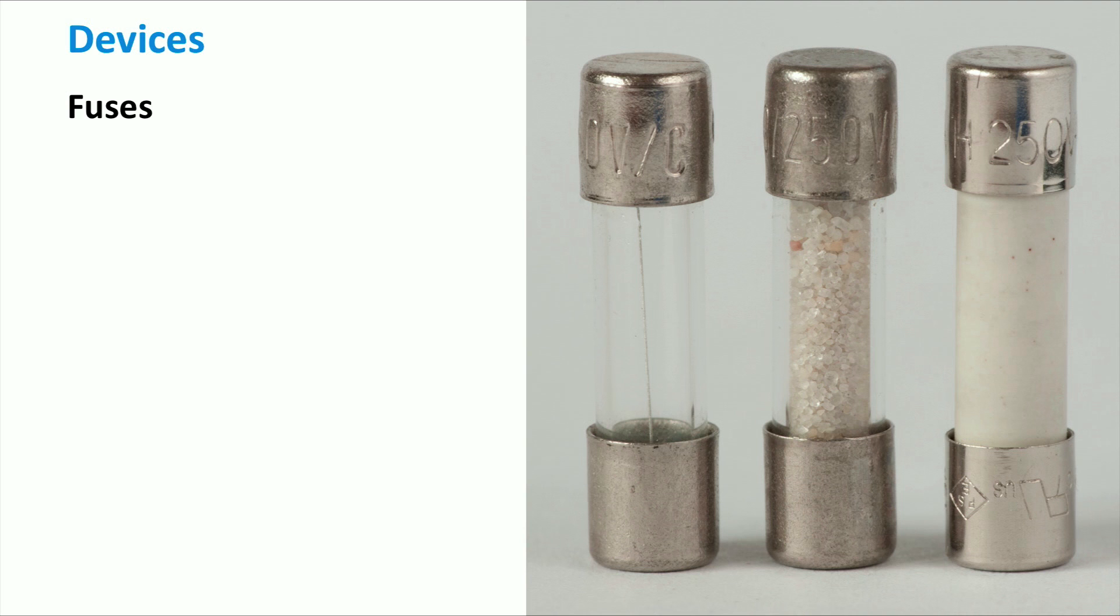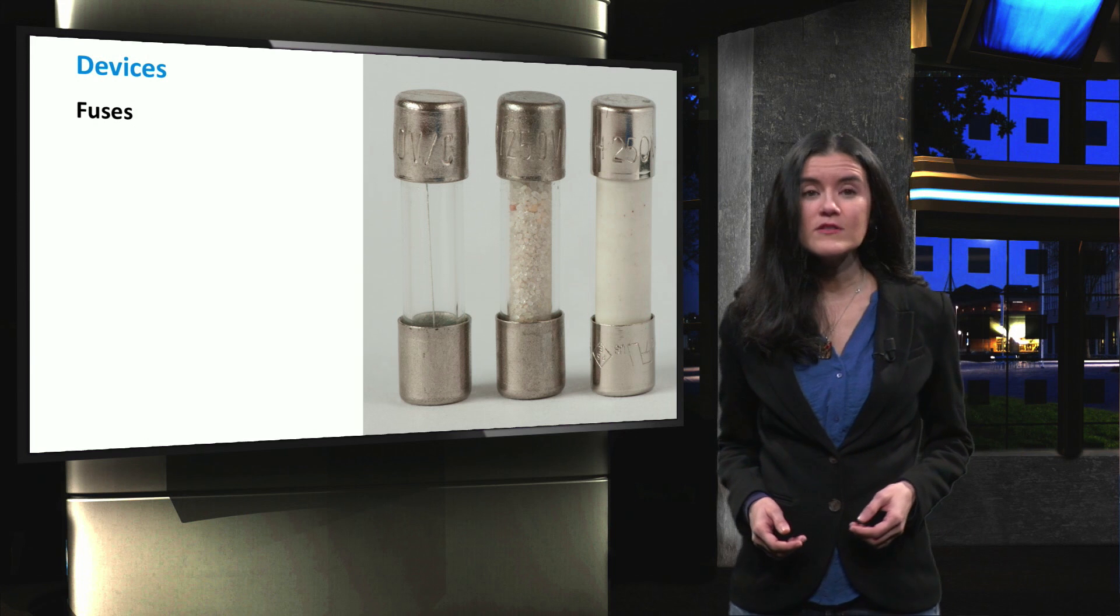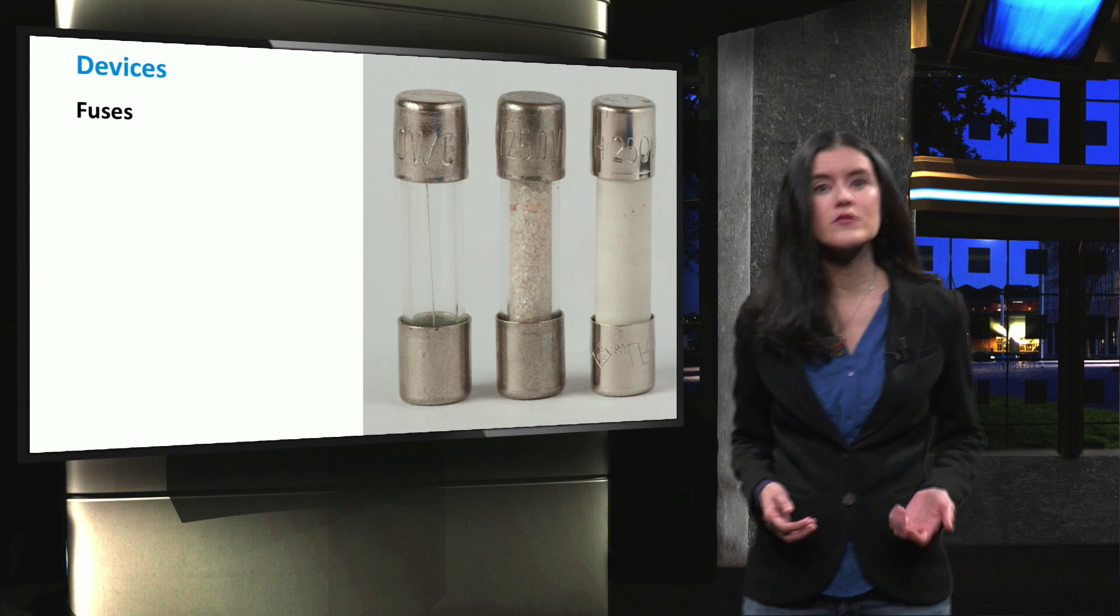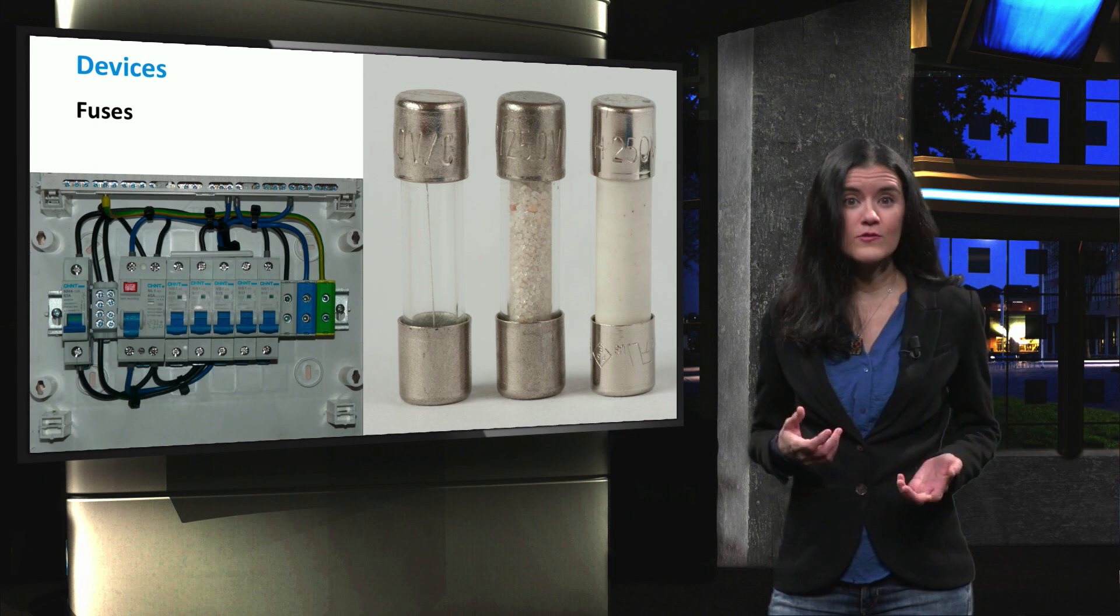From the left to the right, you will find a fuse with simple glass housing, one filled with sand and another with ceramic housing. Different housing materials and fillings are necessary to increase resistance to overcurrents. For example, ceramic fuses have generally higher current ratings compared to the ones with glass housing. At household level, fuses are stored in the fuse box.